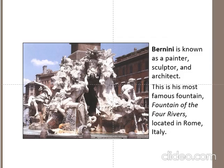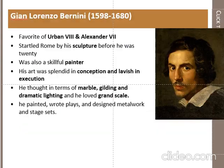A very famous architect of this style is Bernini, known as a painter, sculptor, and architect. His most famous work is the Fountain of the Four Rivers, located in Rome, Italy. Bernini was the favourite of Urban VIII and Alexander VII. He was settled in Rome by his sculptor father before he was 20. He was a skillful painter, his art was splendid in conception and lavish in execution. He thought in terms of marble, gilding, and dramatic lighting, and he loved grand scale.